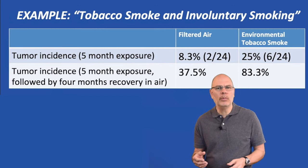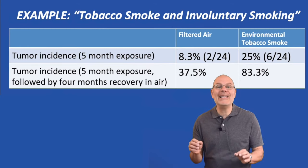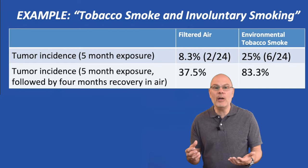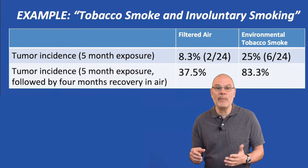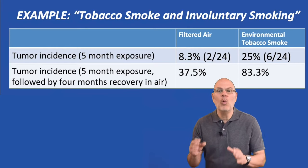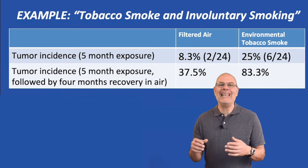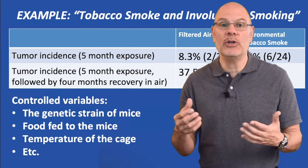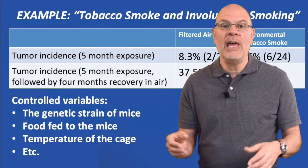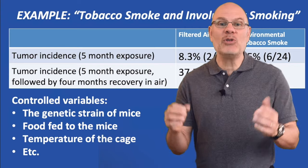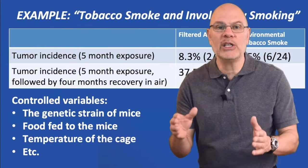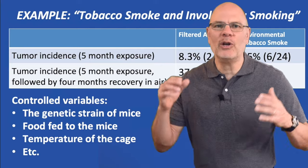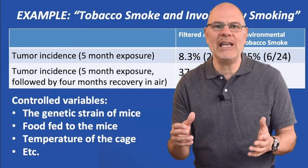What's the control group? The mice in filtered air. What's the independent variable? Exposure to environmental tobacco smoke. What's the dependent variable? The incidence of tumors. All the other variables are controlled. They use the same strain of mice in both groups, both groups ate the same food, and their cages were at the same temperature.